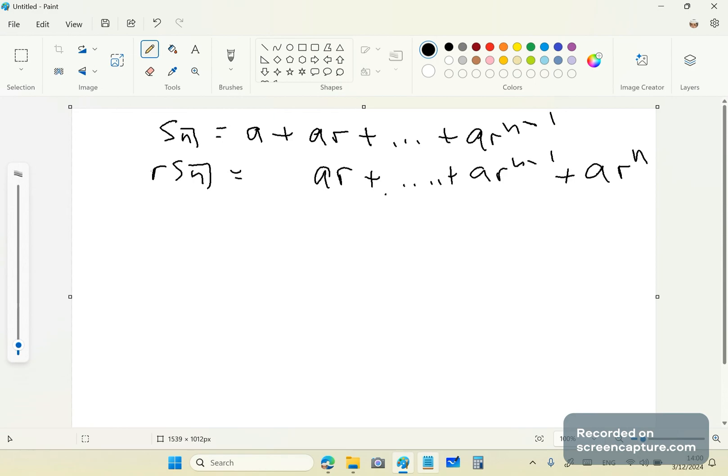So if we do a subtraction, if this is 1 and this is 2, and we say 1 minus 2, we'll get something like 1 minus R times S_n, and A minus AR to the n. S_n equals A times 1 minus R to the n over 1 minus R.